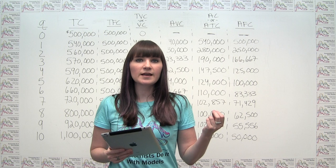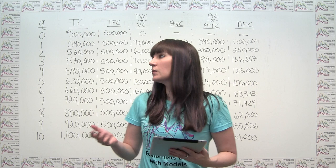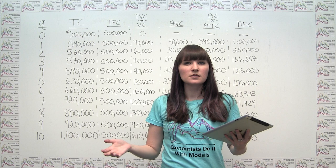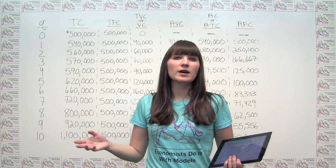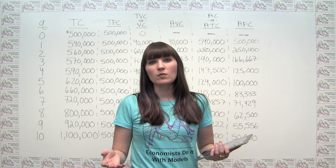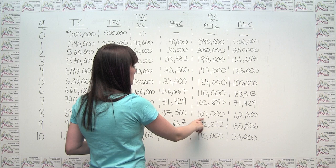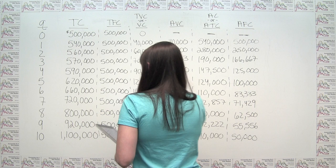The next part asks: what is the minimum cost output? It's important to look at the right numbers. Looking at total cost would give us something trivial — the minimum total cost is at quantity zero. What the question really means is where we minimize cost per unit, i.e., where average total cost is minimized. Looking at our ATC numbers, the smallest value is $100,000, which corresponds to a quantity of eight. So the minimum cost output is a quantity of eight.